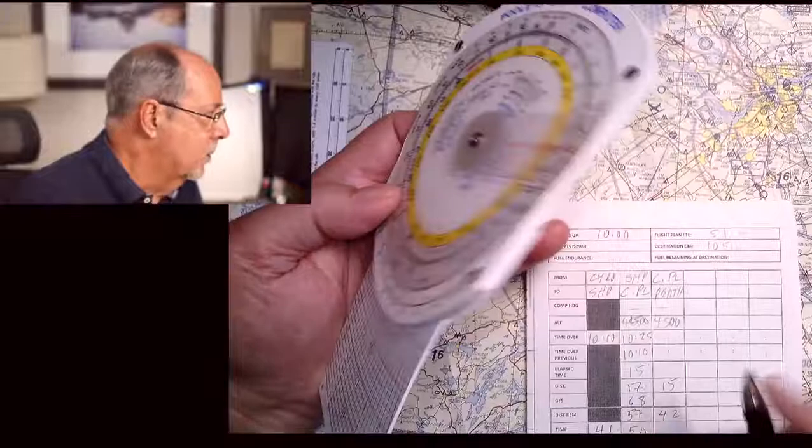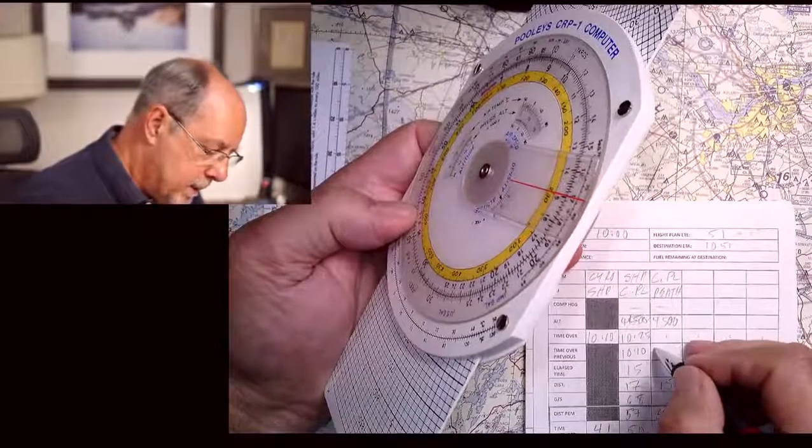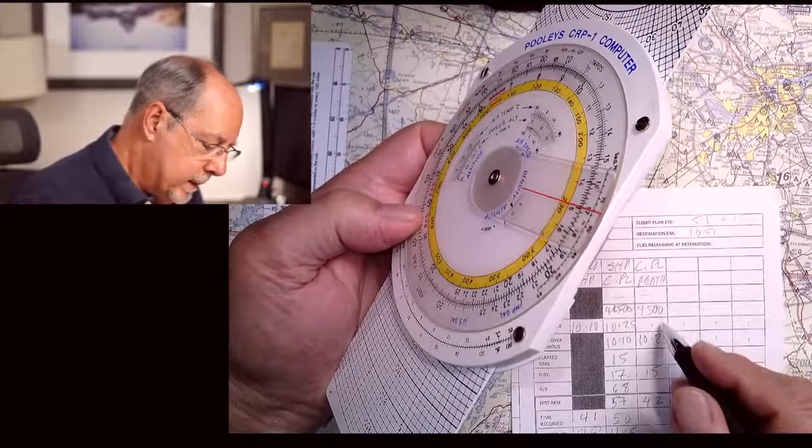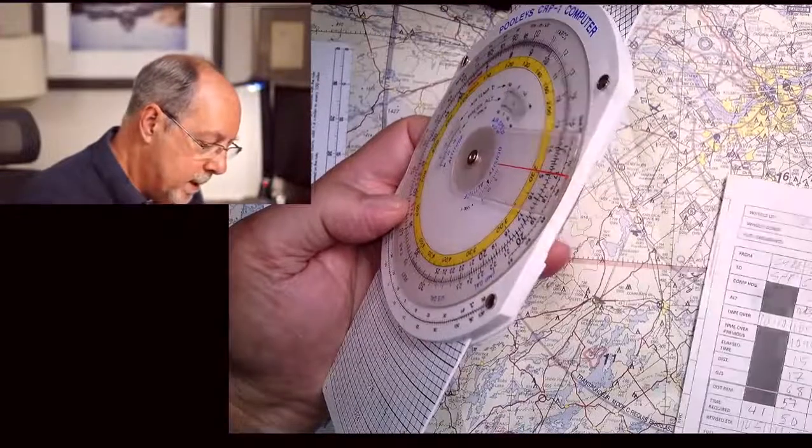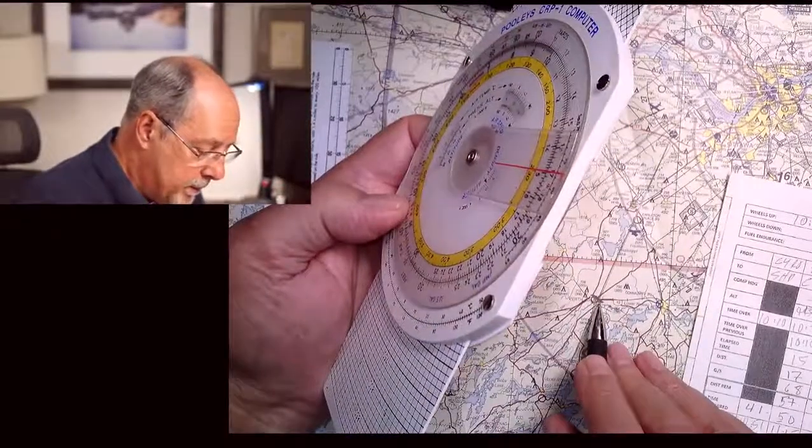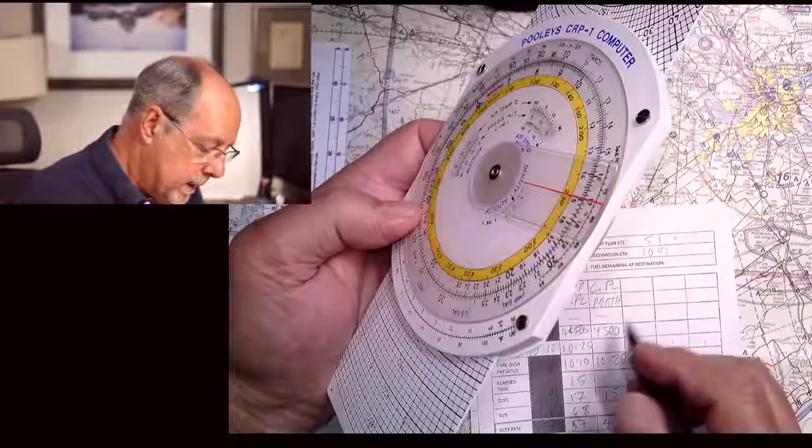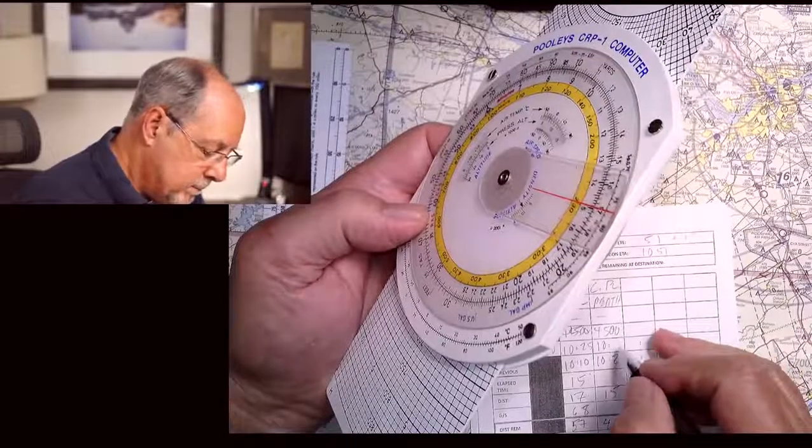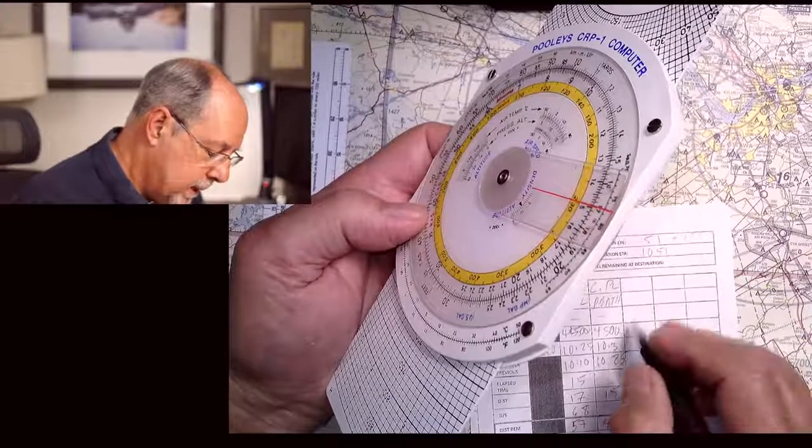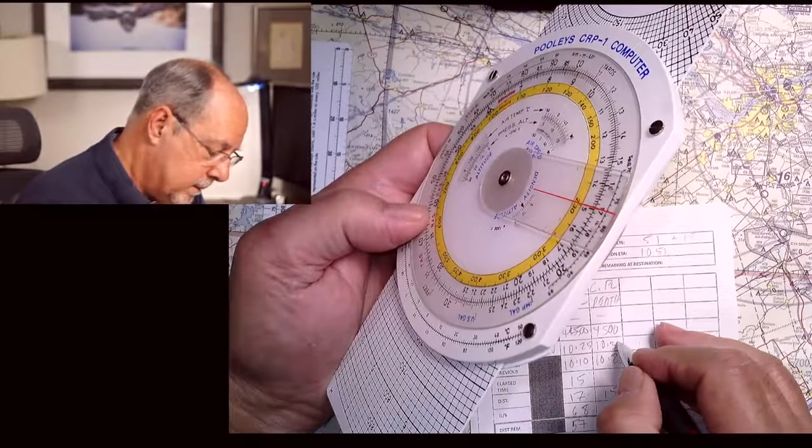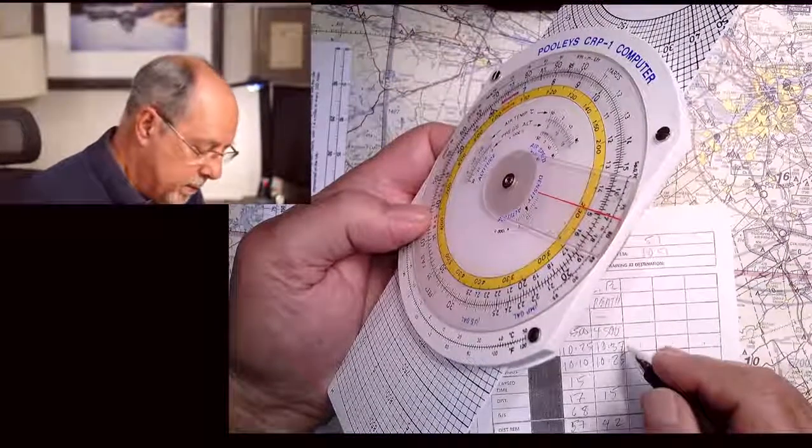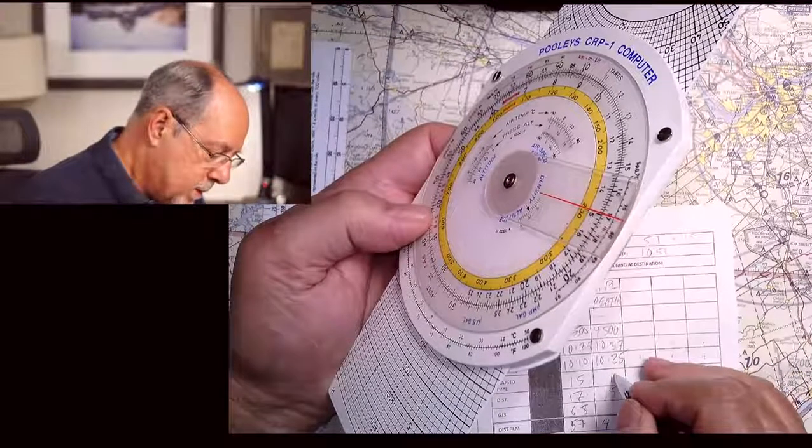So we transfer over our time here, 10:25. And then we measure what time it is when we pass over Perth. And let's say that it actually is 10:37. I'm just making these numbers up. So that's 12 minutes.